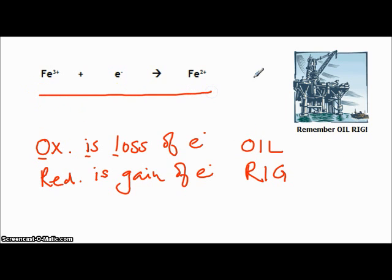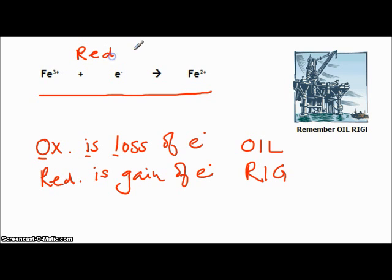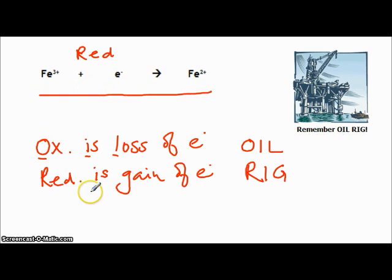If we look at this simple reaction: Fe³⁺ plus an electron — you can clearly see that the Fe³⁺ is gaining an electron, so this is a reduction reaction. Fe³⁺ gains an electron to form Fe²⁺. In this kind of situation it's very easy to see that a reduction reaction is taking place and you can see the gain of electrons. Sometimes reactions are more complicated.